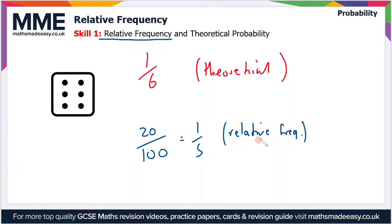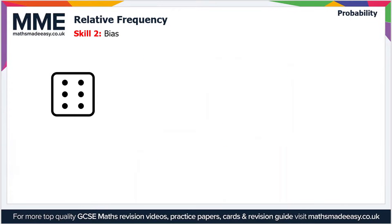you would expect the results of the relative frequency to converge towards the theoretical probability. But that might not be the case if the dice was biased. So this brings us on to the next point then, which is relative frequency in bias testing.